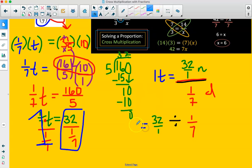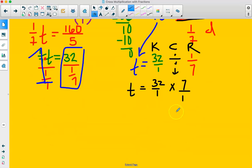This is going to equal 1t which is the same thing as t. Then I'm going to keep, change, reciprocal. So I keep the first fraction 32 over 1, I change the division to multiplication, and then I record the reciprocal of 1/7.